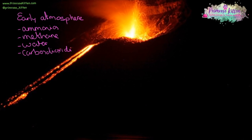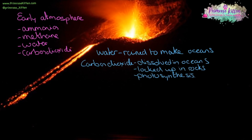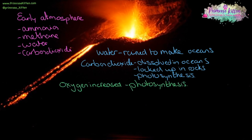The early Earth would have been a pretty unpleasant place — ammonia smells like hair dye or old baby nappies, and methane smells like farts. The level of water vapour decreased as it rained, which formed the oceans. Levels of carbon dioxide decreased as it dissolved in the newly formed oceans, turned into fossils, became locked up in rocks, and photosynthesis started to take place. With the evolution of green plants, oxygen started to increase.